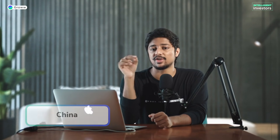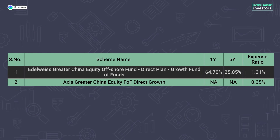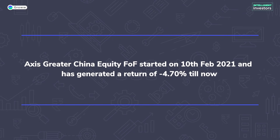For China, there are two fund of funds currently investing in the Chinese market. The first is Edelweiss Greater China Equity Offshore Fund with a five-year return of 25.85% and an expense ratio of 1.31%. The second is Axis Greater China Equity Fund of Funds — Direct Growth — with a lower expense ratio of 0.35%, but it only started on February 10th, 2021, and has returned minus 4.7% so far. Please do your own research before investing in any of these funds.